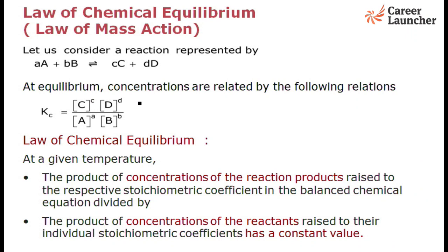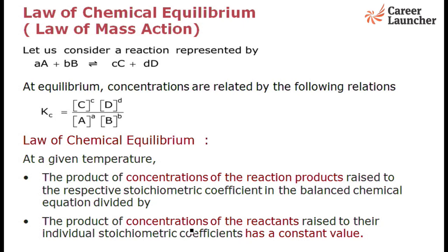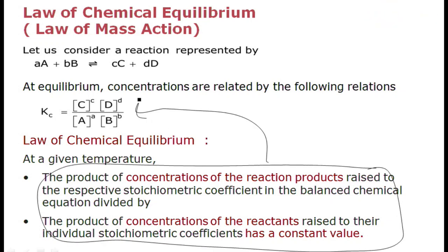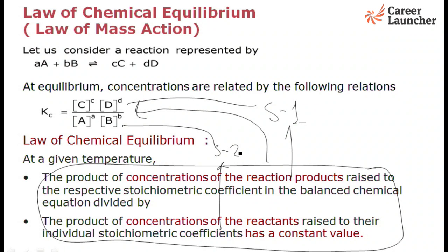What are the laws of chemical equilibrium? At a given temperature, the product of concentrations of the products raised to their respective stoichiometric coefficients in the balanced chemical equation, divided by those of the reactants, is constant. Similarly, the product of concentrations of the reactants raised to their individual stoichiometric coefficients has a constant value. These two statements together form the law of chemical equilibrium, which is used throughout the chapter of chemical equilibrium.